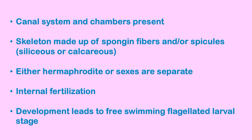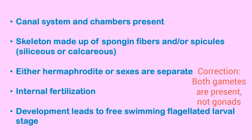Due to absent tissue organization, sponges are classified in a separate sub-kingdom known as Parazoa. The body structure is built around a system of water canals and chambers. The skeleton of most sponges consists of spongin fibers or spicules made up of calcium carbonate — known as calcareous spicules — or silicon dioxide, known as siliceous spicules.